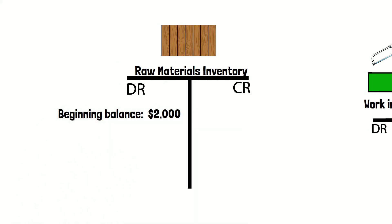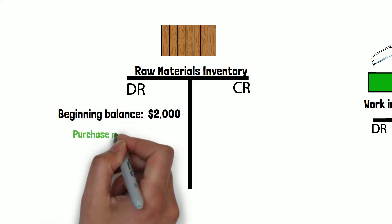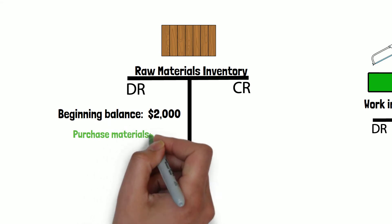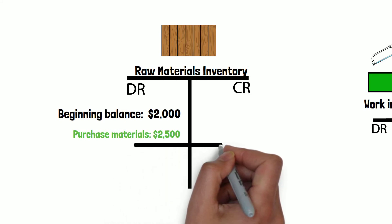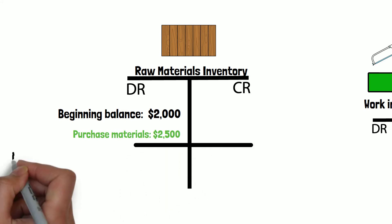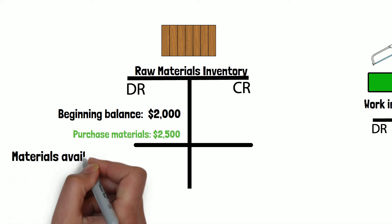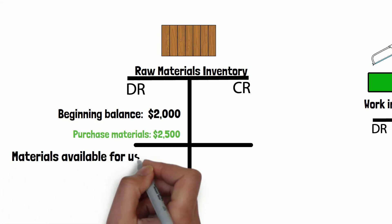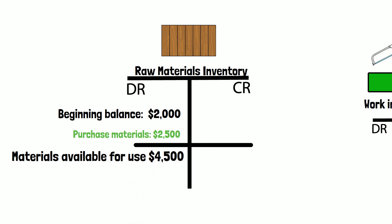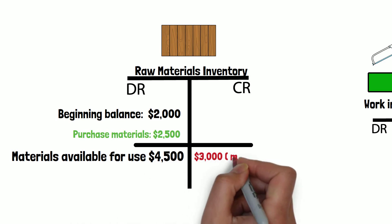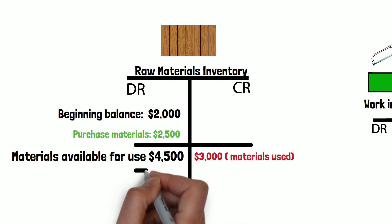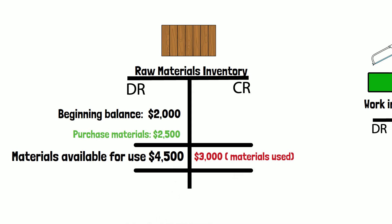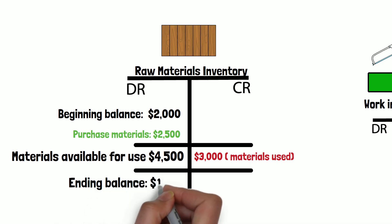Let's take a look at the raw materials inventory. Suppose the beginning balance is $2,000 and during the year we purchased $2,500 of materials. That means the total materials available for use would be $2,000 plus $2,500, which is $4,500. Suppose during the year we used $3,000 of materials, so that leaves the ending balance of the raw materials inventory at $1,500.